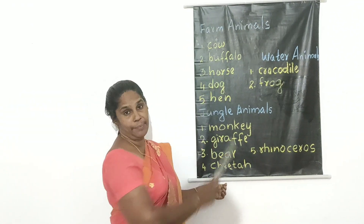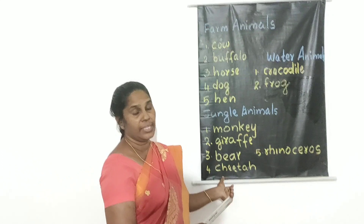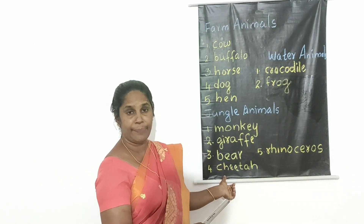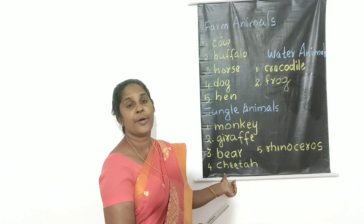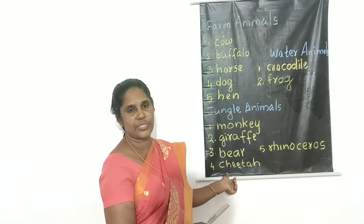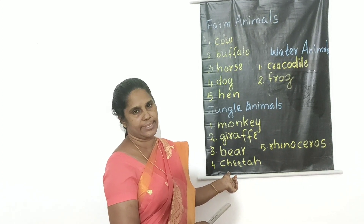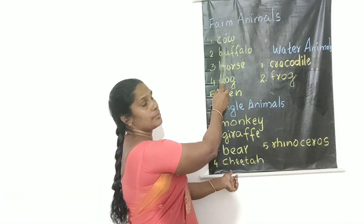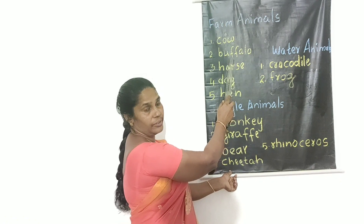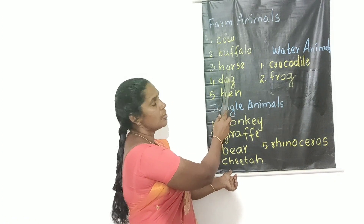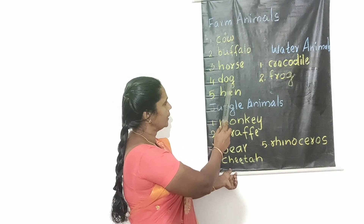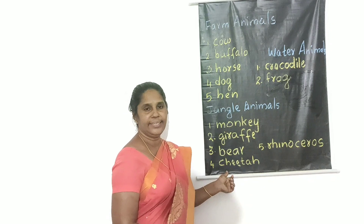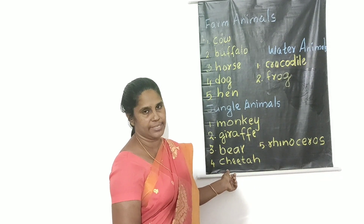Farm animals. Near our house, we are keeping some animals. They are called farm animals or domestic animals: cow, buffalo, horse, dog, hen. They are farm animals which we keep near our house.